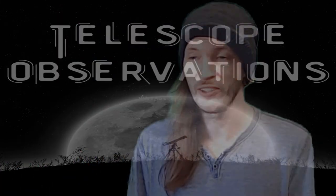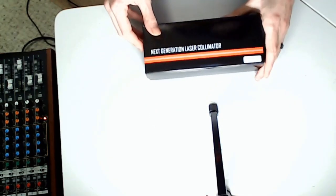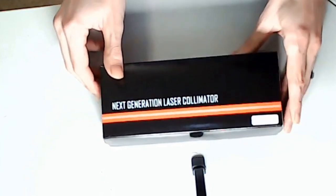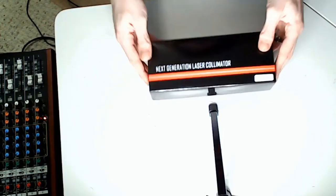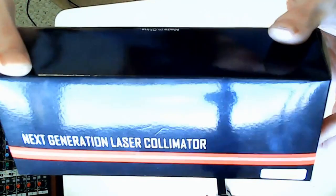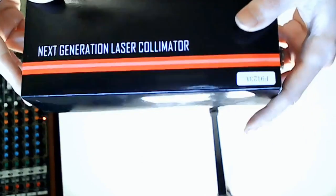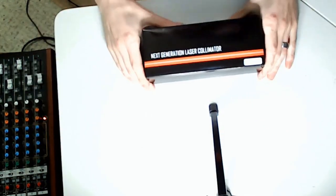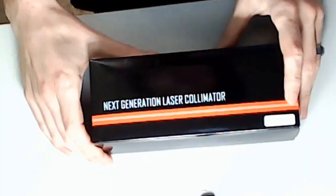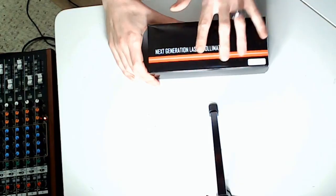All right everybody, so here we are with the desk. This is the packaging, this is the box it comes in. Strangely it doesn't have the SVBONY logo on the box, but we're not talking about the packaging today, we're talking about what's inside the package, which is the SVBONY laser collimator for your Newtonian reflector telescope.